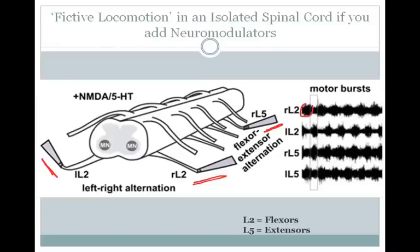The bursts are activity or activation of the motor neurons in that root. The L2 root contains the flexor motor neurons, and in L5 you have the extensors. If you look just on the right side, the flexors and extensors alternate back and forth. Similarly, that alternation occurs between the left L2 flexor and extensors, and you also have alternation between the right L2 and left L2. That back and forth alternation is similar to what you would see if you recorded from muscles — the flexors and extensors — on both sides of the body when an animal was walking.